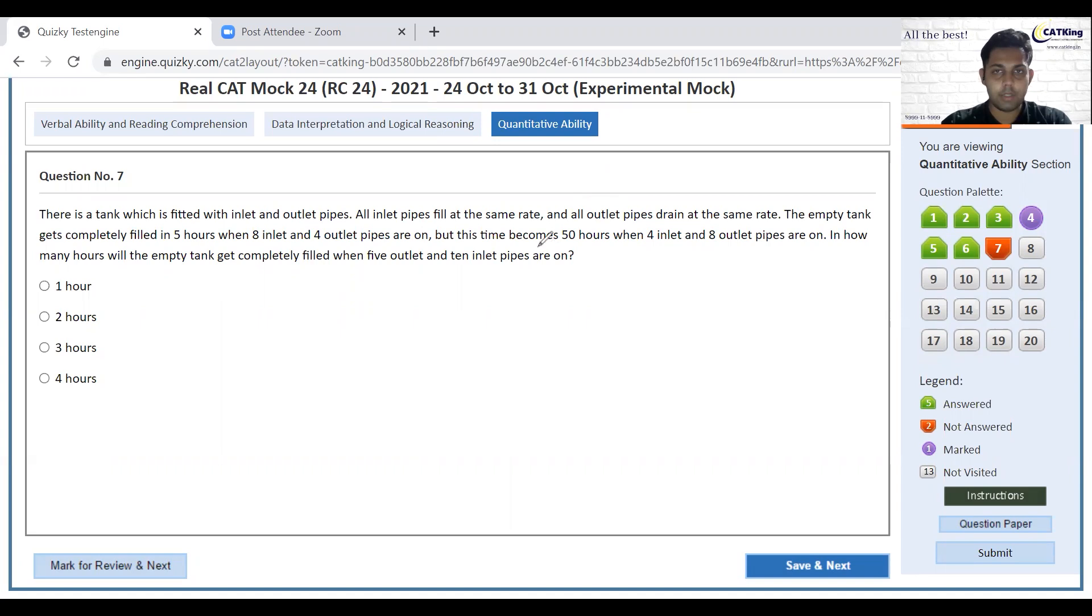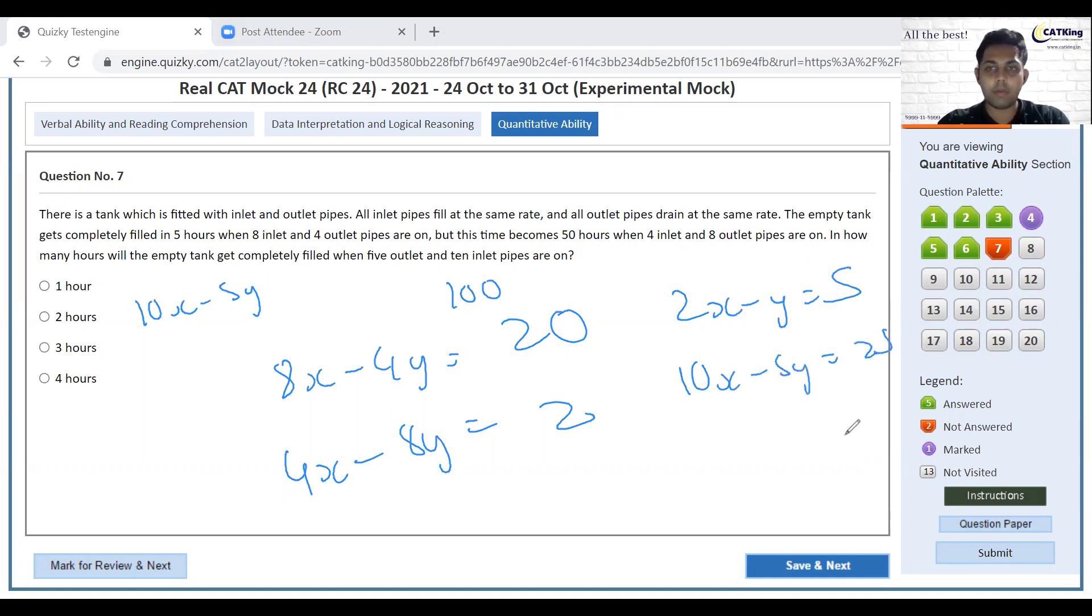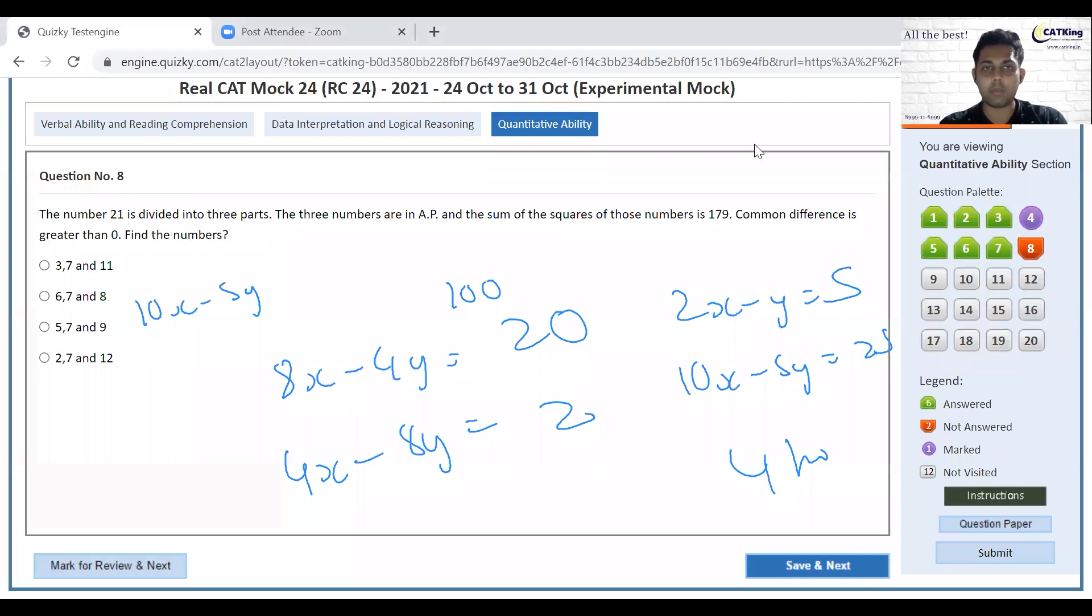Okay, 5 hours 50 hours assume total work equals 100 so 8 inlet minus this equals 5. 20s are and 4 inlet minus 8 outlet equals 2. 5 outlet 10 inlet. This is the same as this so basically x minus, sorry 2x minus y equals 5. If I multiply this into 5, 10x minus 5y equals 25. 25 divided by 100 is 4 hours simple.